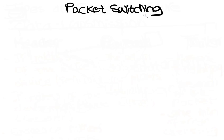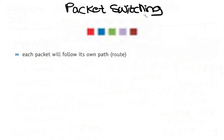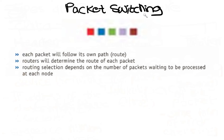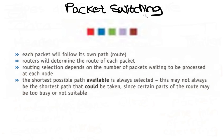Suppose a photograph has been split up into five packets that have been sent in a particular order. Each packet will follow its own path. Routers will determine the route of each packet. Routing selection depends on the number of packets waiting to be processed at each node. The shortest possible path available is always selected. This may not always be the literally shortest path, since certain parts of the route may be too busy or not suitable.